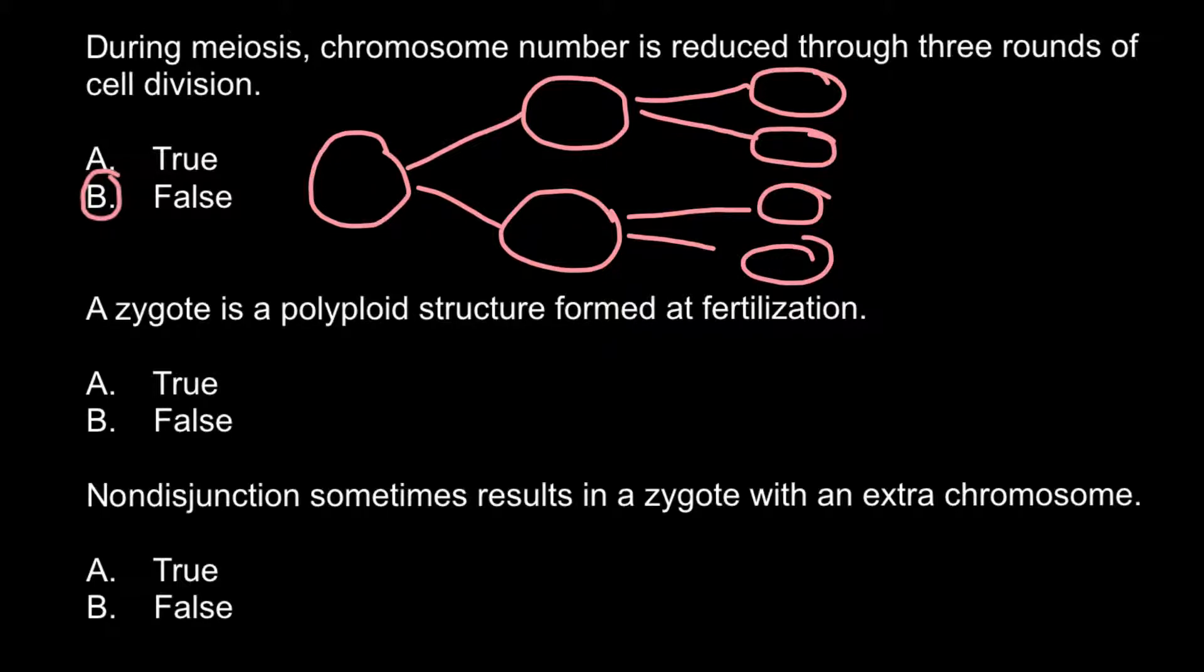Next question: A zygote is a polyploid structure formed at fertilization. Is it true or false? This is a tricky question because many people know that a zygote is formed by two gametes.